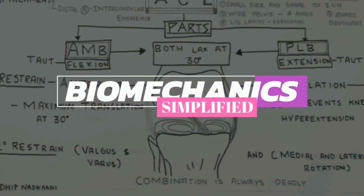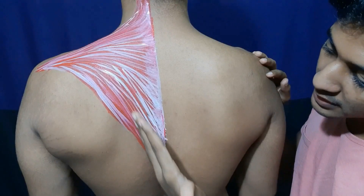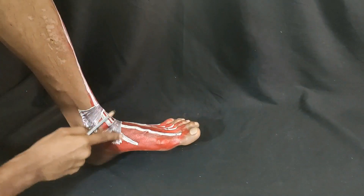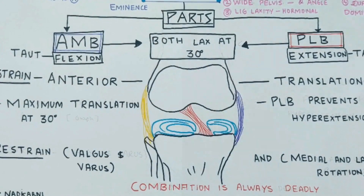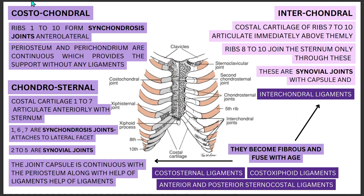Hello guys, this is Adeep, welcome to my channel Movement Science where I simplify biomechanics. In today's video we are going to talk about the second part of the articulations seen at the ribcage. Today we are going to cover the costochondral, chondrosternal, and interchondral articulations.